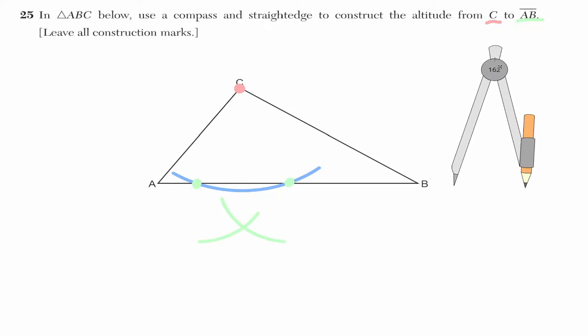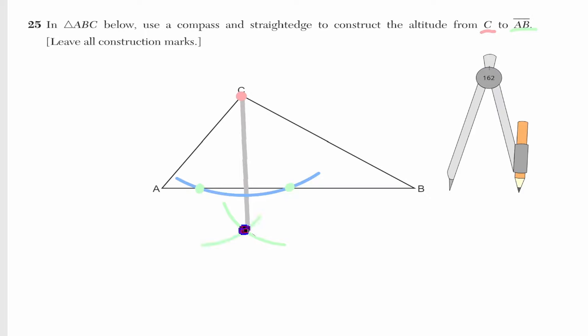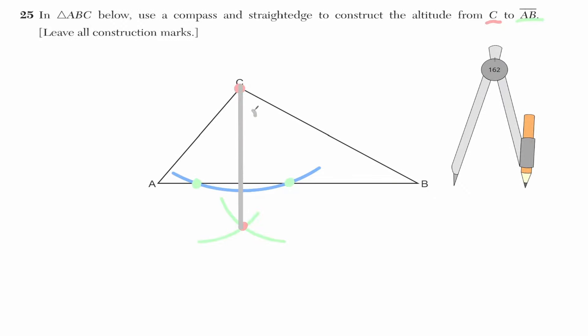We are done. When I consider the point of intersection between those two arcs and connect it to point C, this line is our altitude. It is an intersection of 90 degrees with line segment AB. Let's take a look at the next question.